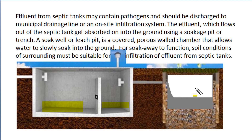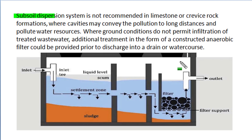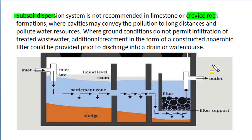The effluent which flows out of the septic tank gets absorbed into the ground using a soak pit or trench. This soak pit or leaching pit is a covered porous-wall chamber that allows water to slowly soak into the ground. For a good soak away to function, the soil conditions of the surrounding area must be suitable for infiltration of effluent from the septic tank. Subsoil dispersion or infiltration of effluent is not recommended in soil conditions which have limestone or cavernous rock formation, as the liquid effluent may create cavities that convey pollution over long distances and may pollute drinking water resources. Where ground conditions do not permit infiltration, additional treatment in the form of a constructed anaerobic filter could be provided prior to discharge into the nearby drainage system or water courses.